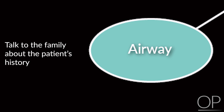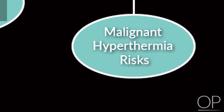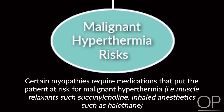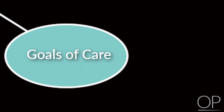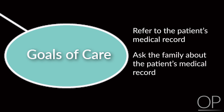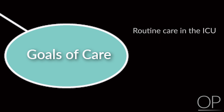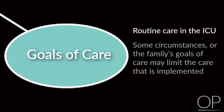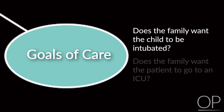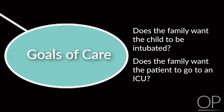Talk to the family — they should know about airway history. Also consider positioning. Certain conditions place patients at risk with specific medications: are there malignant hyperthermia risks? While rare, certain myopathies make knowing the underlying diagnosis essential. And lastly, what are the goals of care? Start with the medical record and talk to the family. The majority of patients with special healthcare needs will want routine acute care, but some families' goals may limit what you implement even acutely. Clarify with the family: do they want this child intubated? Would they want to go to an ICU? Reassess your goals and resources accordingly.